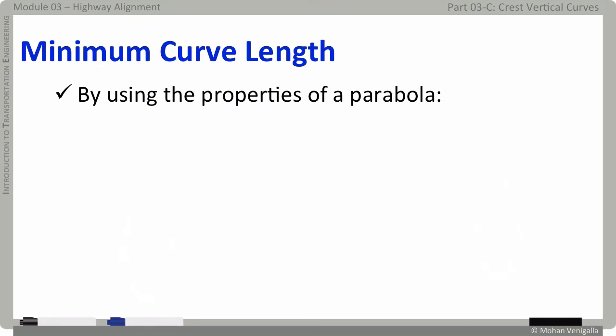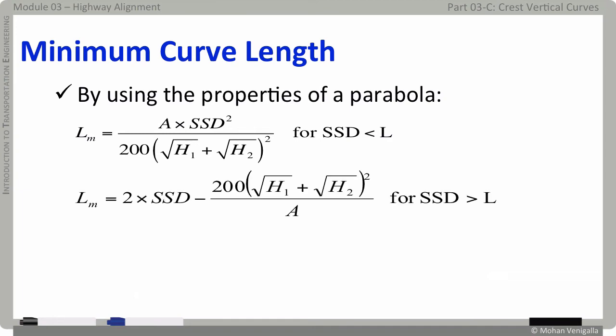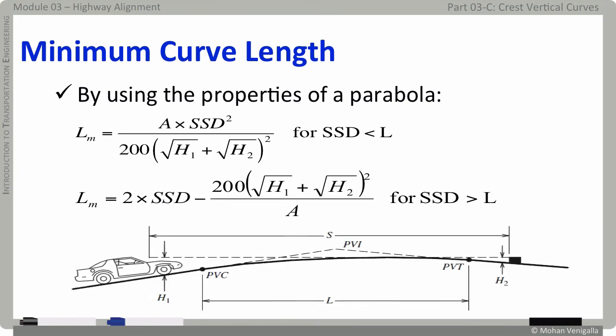By using the properties of equal tangent parabola, it can be shown that the minimum length of the curve L sub M for a required stopping sight distance is given by this equation, which is for stopping sight distance less than length of the curve, and by this equation for SSD greater than the length of the curve L. Remember, H1 is the height of the driver's eye and H2 is the height of the object. Where are G1 and G2 in these equations? They're there in the form of A, the change of grade parameter. We know A is the algebraic difference between G1 and G2, and it in a sense captures the effect of change in grade over the entire length of the curve. By algebraic difference, we don't care if it is G2 minus G1 or G1 minus G2 because we are taking a modulus of the difference to obtain A.